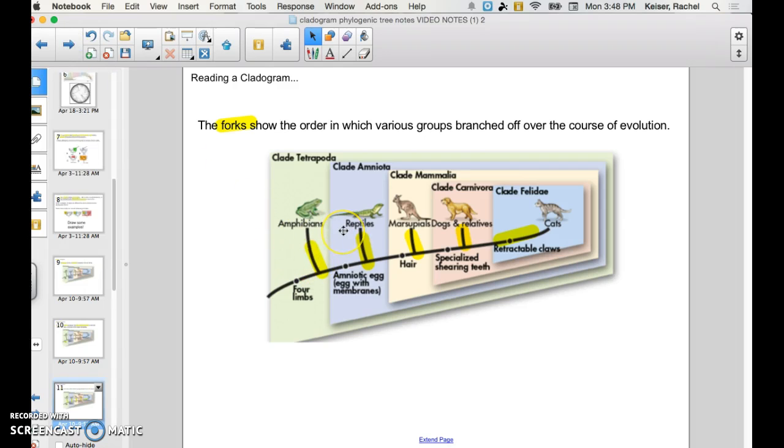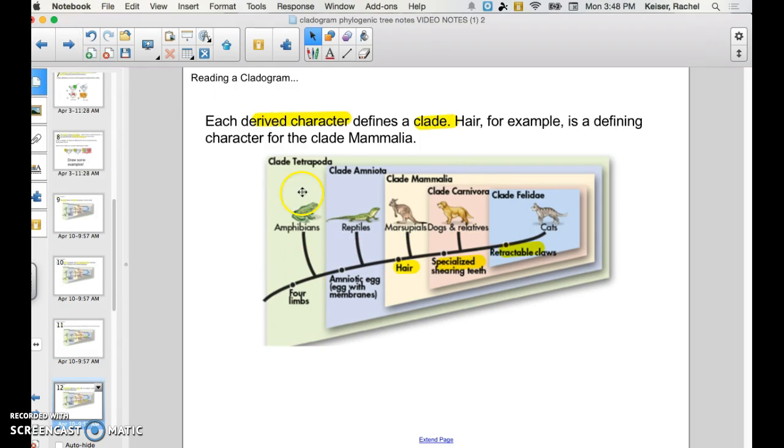The forks show the order in which various groups branched off over the course of evolutionary time. And so each defined characteristic defines a clade. So right here represents a clade of all species that have hair or all mammals that have hair. And so this is the mammalia clade.